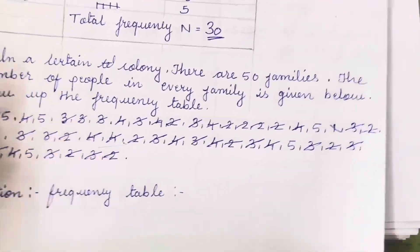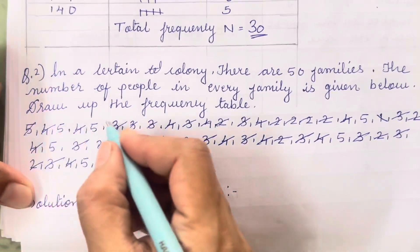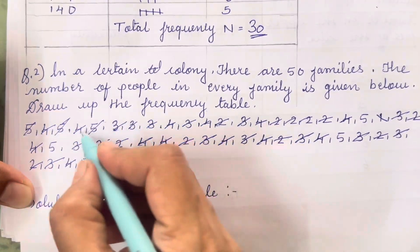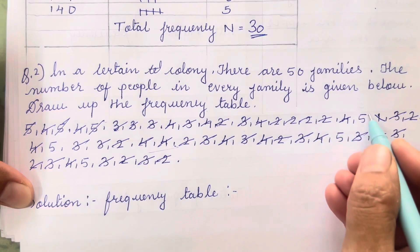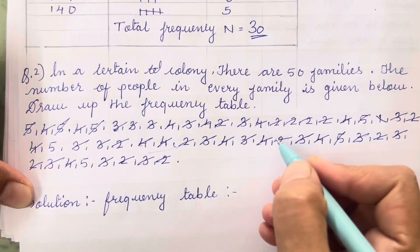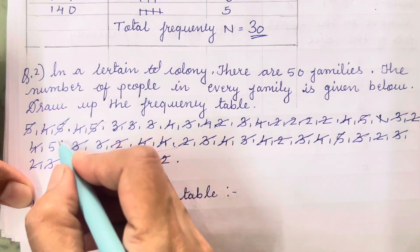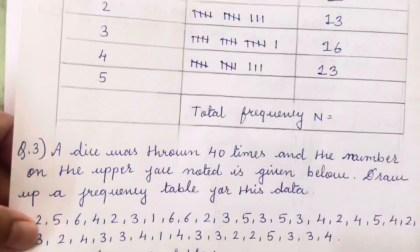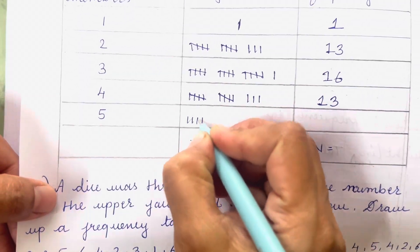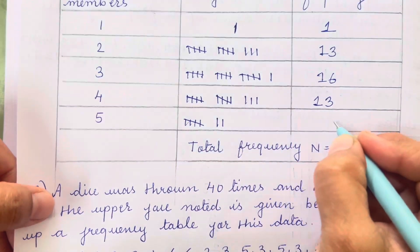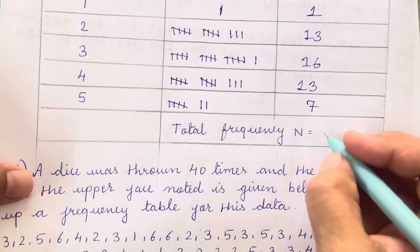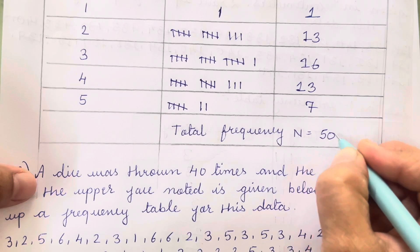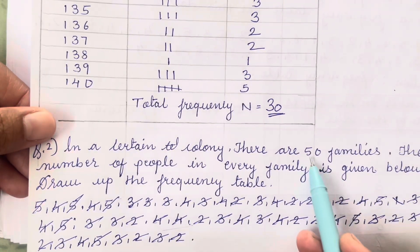Then how many 5s are there? Counting: 1, 2, 3, 4, 5, 6, 7 — frequency is 7. Now count all the numbers and you will get the answer 50. If your addition gives 50, it is correct — and you will see the answer is also given in the question itself. Let's move on to the third sum.